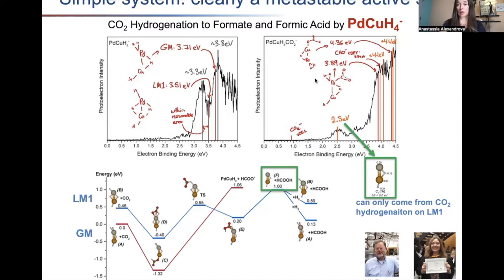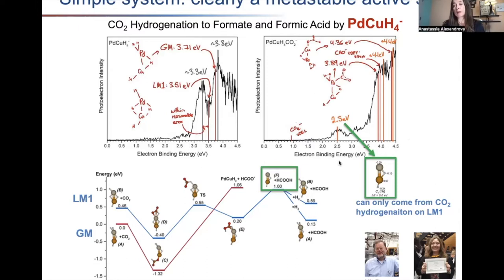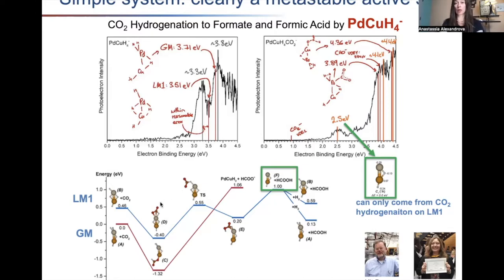In the initial hydride spectrum we see signatures from two different isomers — the global minimum and LM1. Then CO2 is fed to the chamber in a gas-phase reaction, producing various adducts. We can attribute spectral features theoretically through equation-of-motion coupled cluster theory. There has been a puzzling feature at 2.5 eV, because nothing seemed to have an electron detachment energy like this, until we computed reaction profiles for our two species reacting with CO2.